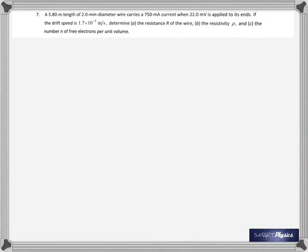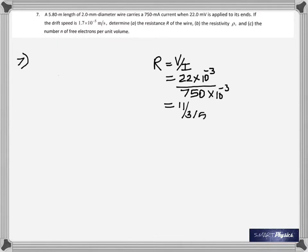Number seven: a 5.80 meter length of 2 millimeter diameter wire carries 750 milliampere current when 22 millivolts is applied to its ends. The drift speed is given. Find the resistance, the resistivity, and the number of free electrons per unit volume. Okay, resistance is just voltage divided by current. Let's do that first. Resistance is voltage divided by current: 22 millivolts is 22 times 10 to the negative 3, 750 milliamperes is 750 times 10 to the negative 3, so we get 11 by 375 ohms as the resistance. Now to find resistivity, it's R times area of cross section divided by the length. We already got the resistance is 11 by 375.